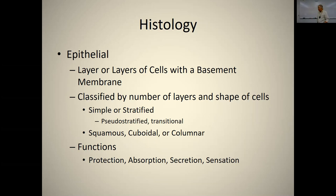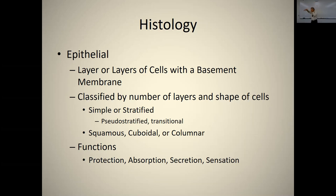Epithelial tissue provides protection from abrasion, infection, and dehydration. It also allows absorption and secretion — bringing things in across the epithelial lining from the body cavity into the blood, or secretion going the other direction. Sensation is another function: epithelial tissues are innervated, and you can feel pressure, heat, cold, and pain. They have receptors in them.